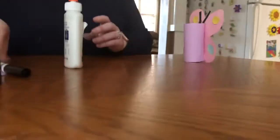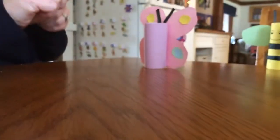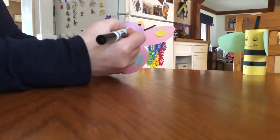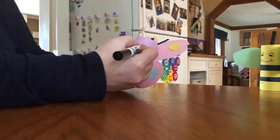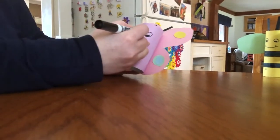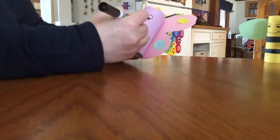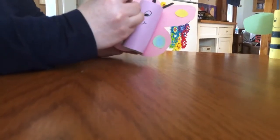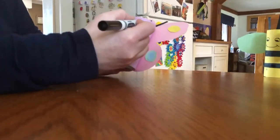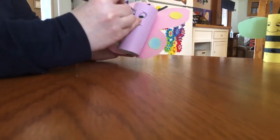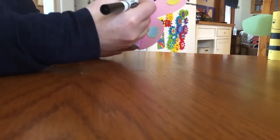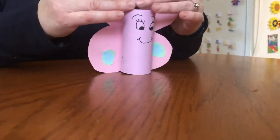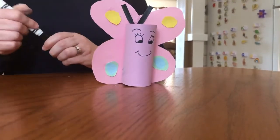And now our butterfly just needs a face, so we're going to give our butterfly some eyes, a mouth, and I don't know, maybe let's give our butterfly some eyelashes, maybe some eyebrows. Again, whatever detail you'd like to add. And there you have our toilet paper little butterfly.